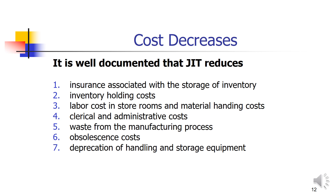For cost decrease, it is well documented that Just In Time reduces the following costs: insurance associated with the storage of inventory — the more quantity you have, the more insurance you pay; spoilage and theft will be reduced; inventory holding costs will be reduced; labor costs in storerooms and material handling costs will be reduced; clerical and administrative costs will also decrease; waste from the manufacturing process will decrease; obsolescence costs and any other costs related to inventory will be reduced; and depreciation of handling and storage equipment will be reduced. That is the major benefit of cost reduction using the Just In Time system, which reduces ordering costs, holding costs, and many other costs reflected in the price of the final product.